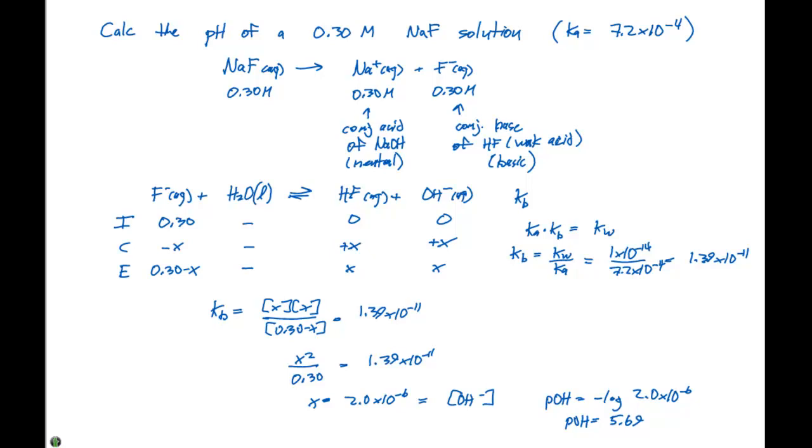To get the pH, we take 14 minus 5.69 and get 8.31, which is going to be slightly on the basic side, which is what we would predict because we have a conjugate base of a weak acid.